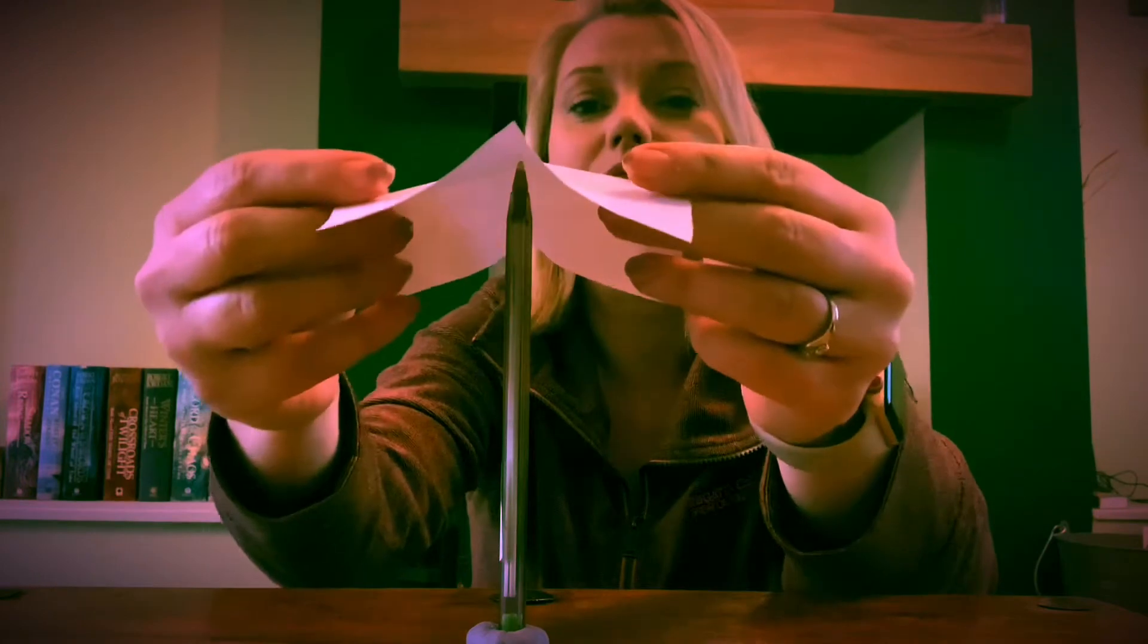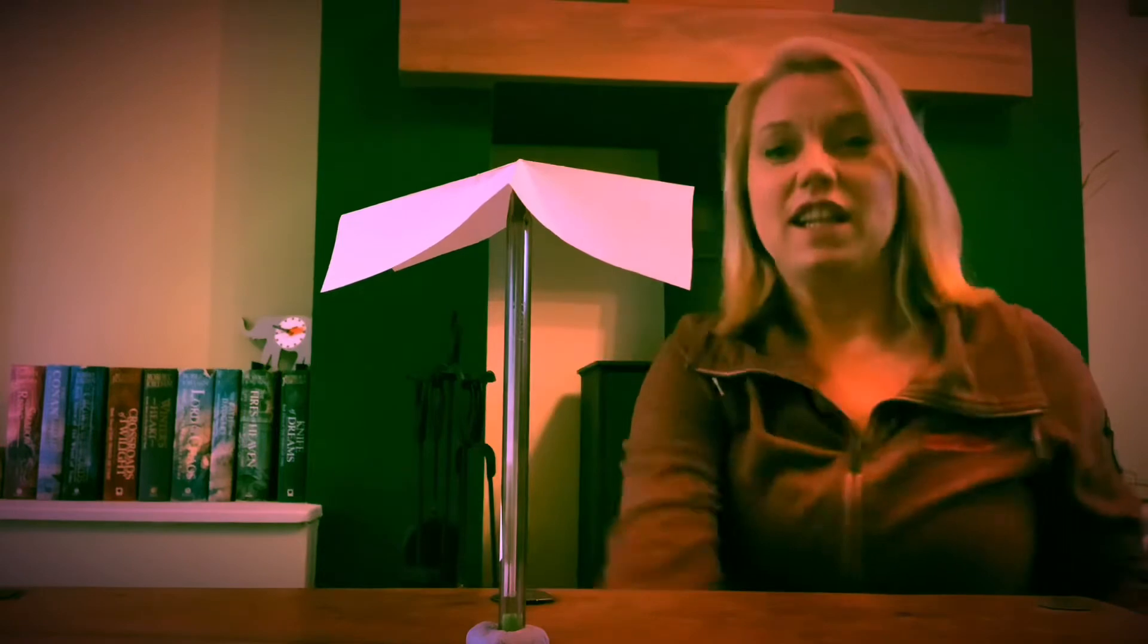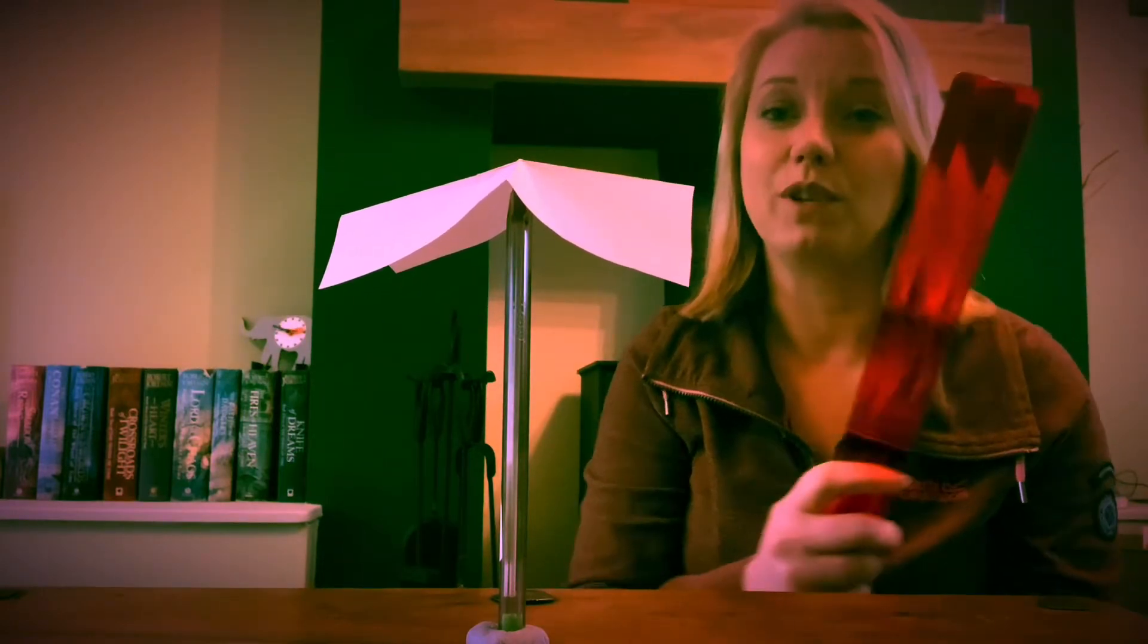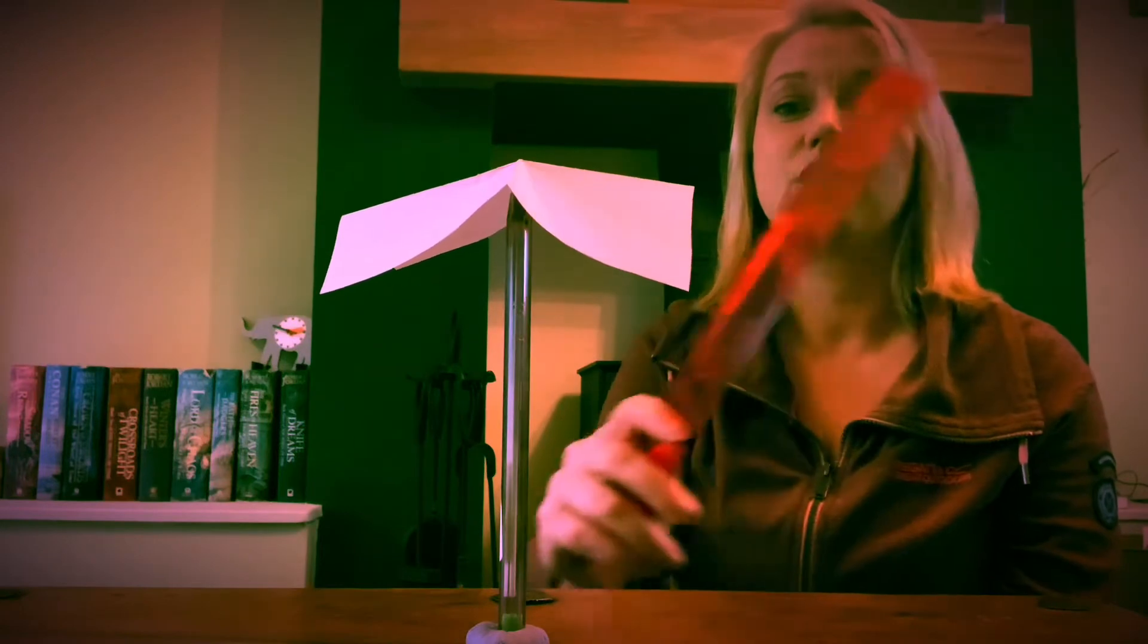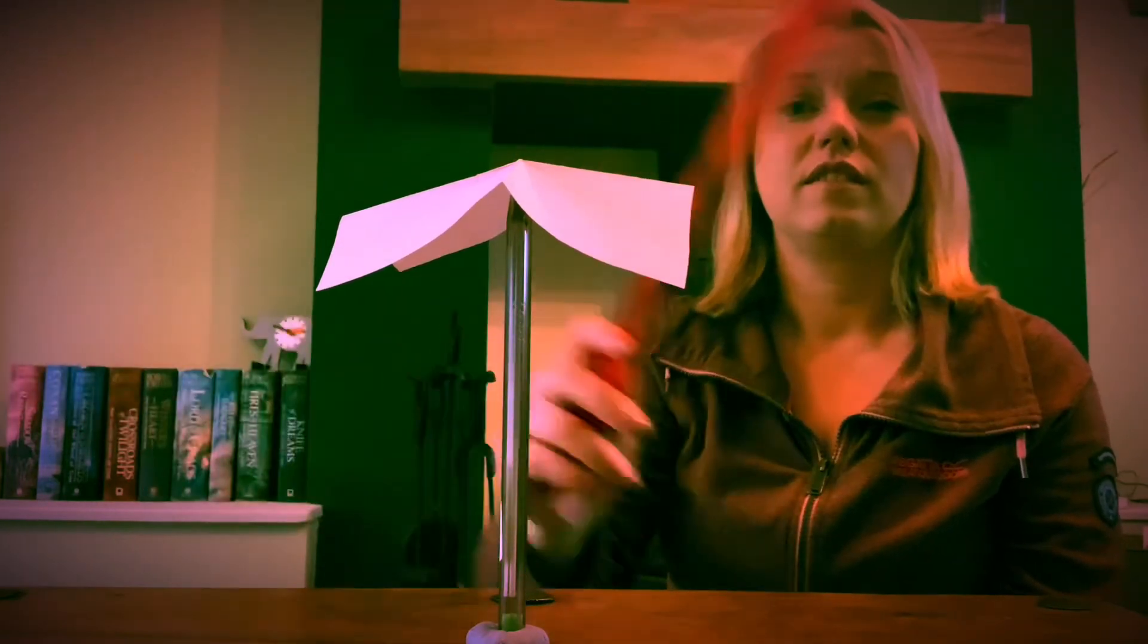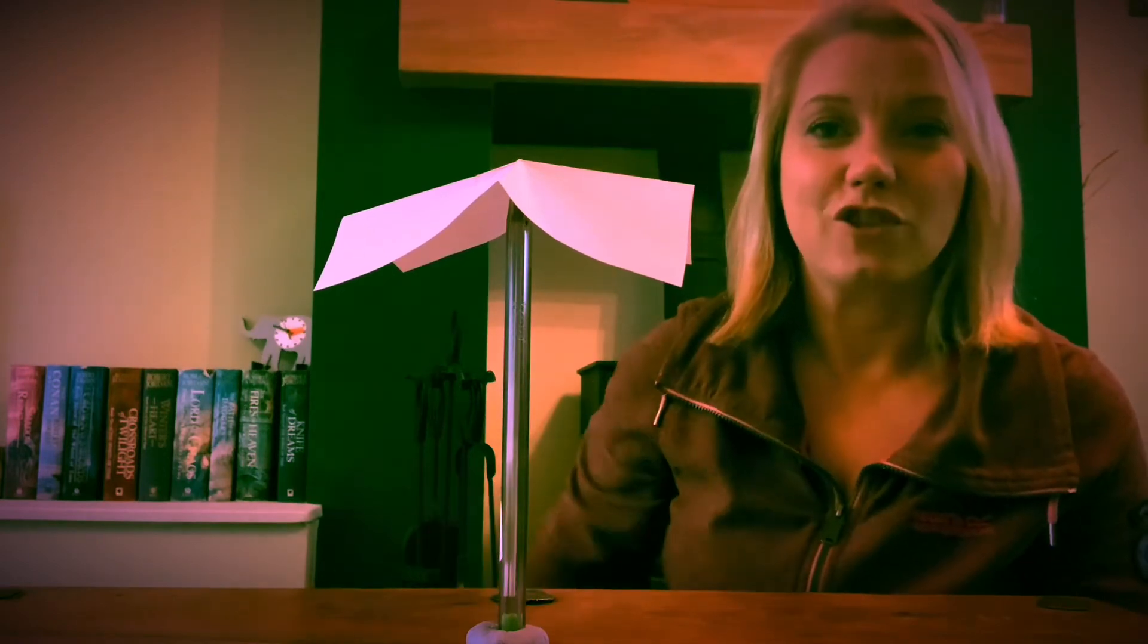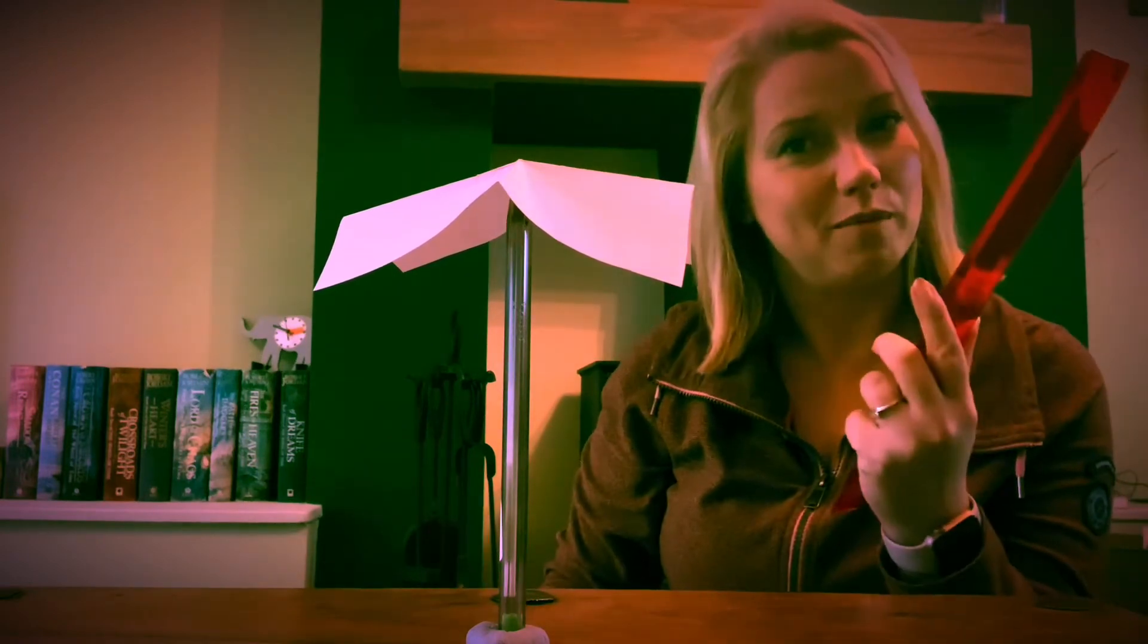Now the next thing we're going to do is make a magic ruler. So I've just got a normal plastic ruler here. As you can see, if I move it towards the paper nothing much happens. We're going to use static electricity to turn this normal ruler into a magic ruler.